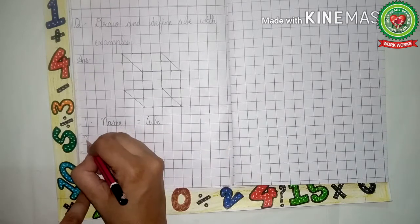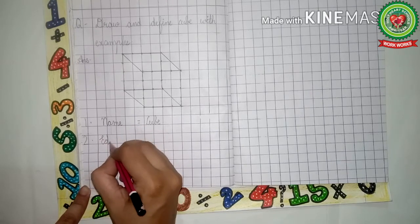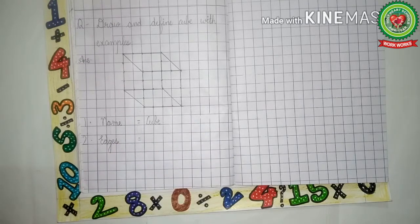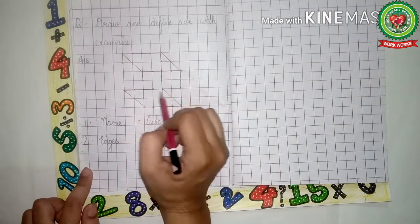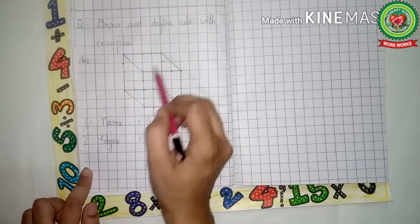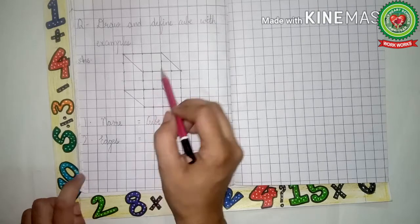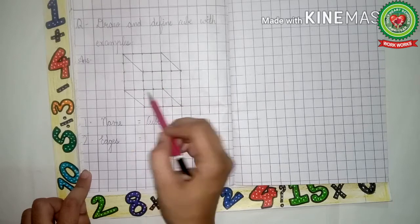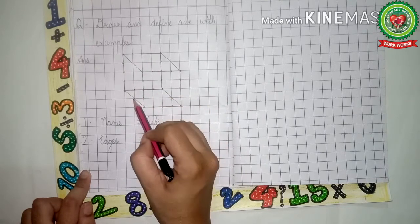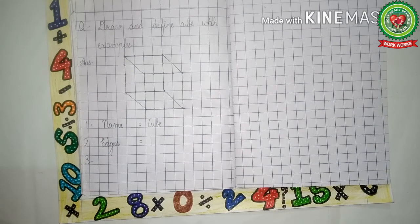Leave one line. Two dot: edges — E-D-G-E-S. Edges are the sides. Now let's count the sides. First we will count the sides of the first square: one, two, three, four. Now we will count the sides of the second square: five, six, seven, eight. Then: nine, ten, eleven, twelve. Cube has twelve edges.